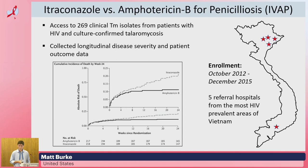Looking at the Kaplan-Meier curve of mortality, two things are really important. First, amphotericin B is a much more effective treatment for patients with talaromycosis than itraconazole. Second, talaromycosis can be a very deadly condition — we see overall mortality of 17%, so it's important for us to figure out how TMPV-1 contributes to this mortality.